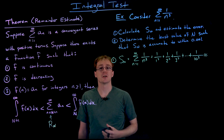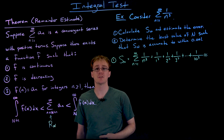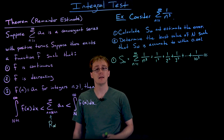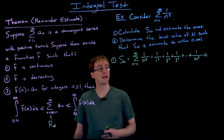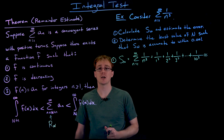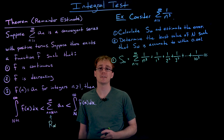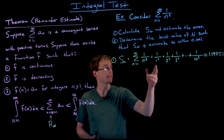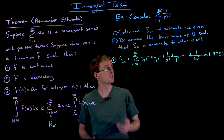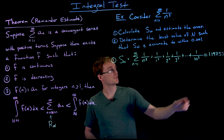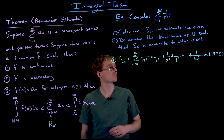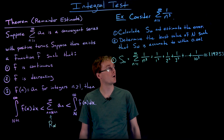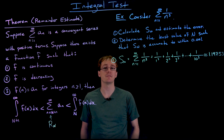This is our tenth partial sum for the series — the sum of the first ten terms. We're going to use a calculator to evaluate this sum. When we use our calculators to take the sum of those first 10 terms, we get that the tenth partial sum is approximately 1.19753.